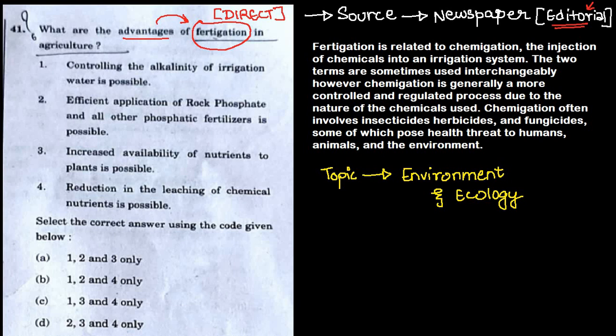The options are: controlling the alkalinity of irrigation water, efficient application of rock phosphate and other phosphatic fertilizers, increased availability of nutrients to plants, and reduction in the leaching of chemical nutrients. Fertigation is related to chemigation, which is the injection of chemicals into an irrigation system. The two terms, fertigation and chemigation, are sometimes used interchangeably.